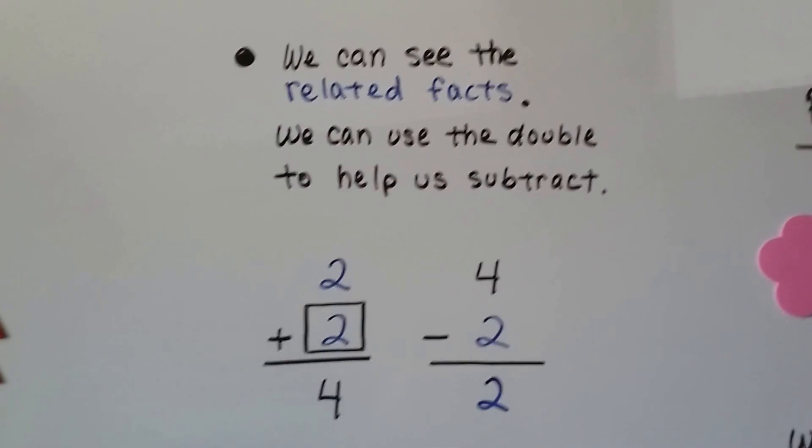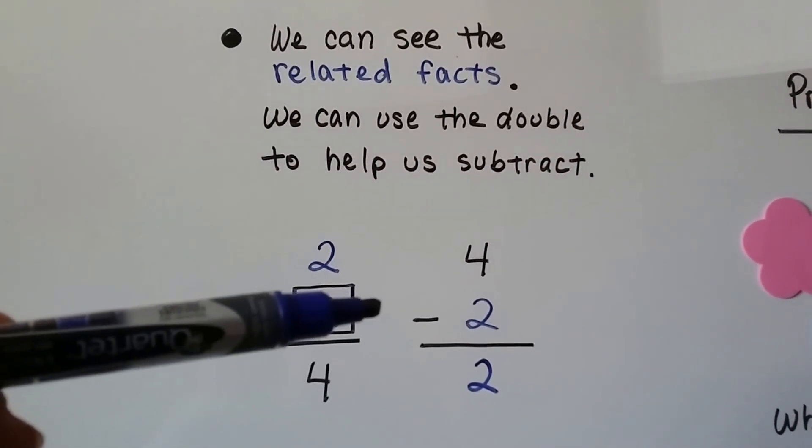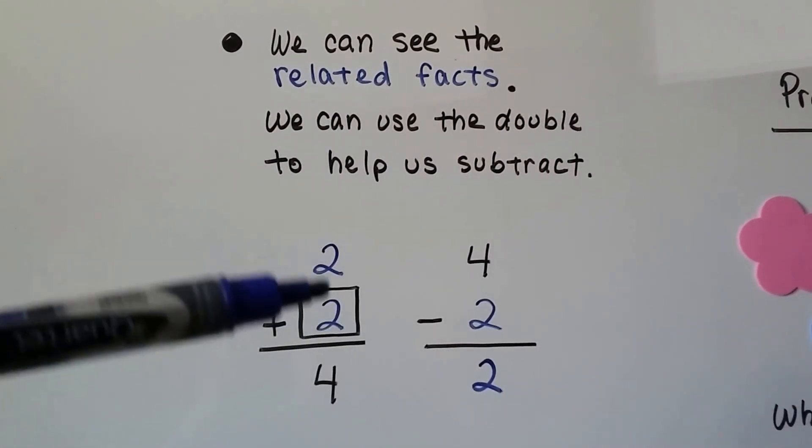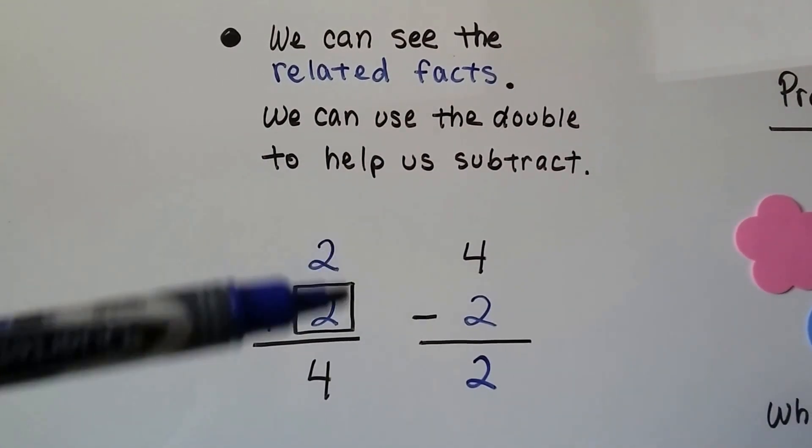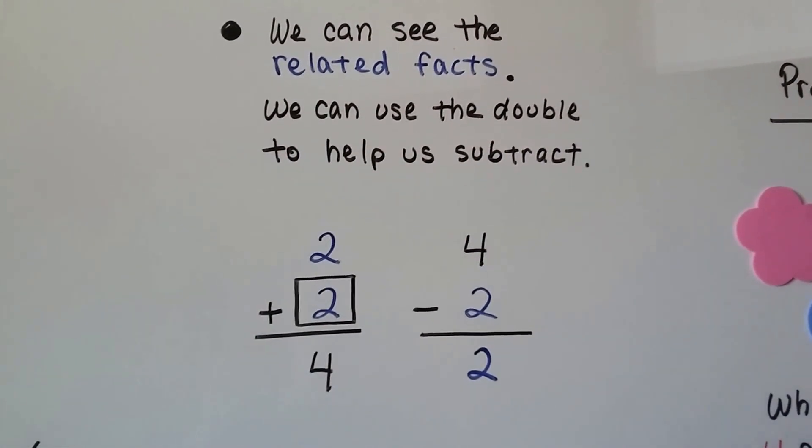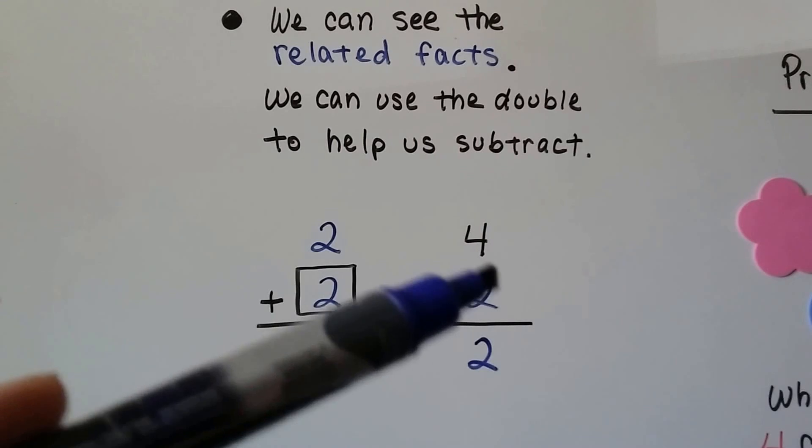If this 2 were missing, if we're doing doubles we know that there's a 2 missing. We could also count up from 2: 2, 3, 4, and put the 2 there. That means there's going to be a 2 here for the difference because we're using doubles.